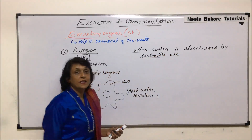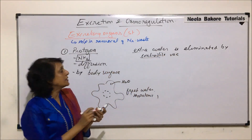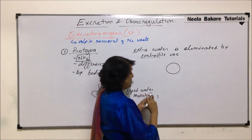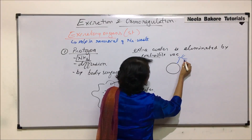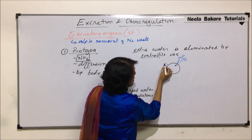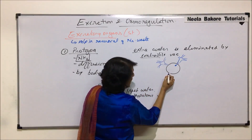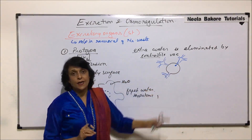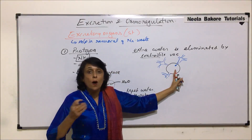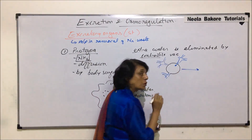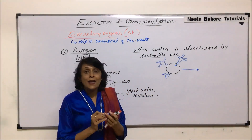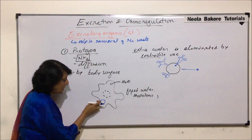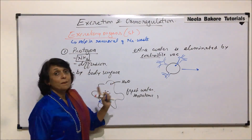In amoeba, the contractile vacuole has a main central contractile vacuole connected to many radiating arms or tubes. These tubes collect extra water and dump it into the main vacuole. All these canals dump that water into the main central contractile vacuole, and from there all that extra water is thrown out through a temporary pore.